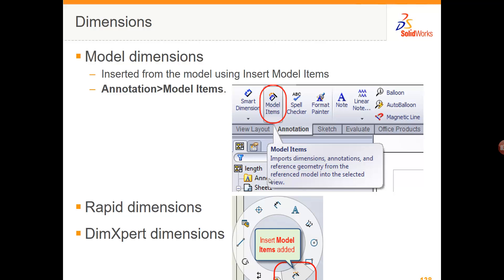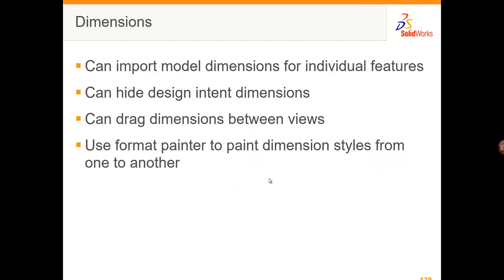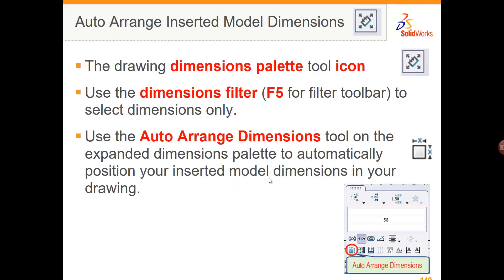Model Items, found on the Annotation tab, can be used to bring in your dimensions from your model. When you need to select dimensions in a drawing, you can use the dimensions filter — press F5 to turn on the filter toolbar — which allows you to filter for dimensions only. Then using the Dimensions Palette icon, when it expands you can use it to auto-arrange dimensions and add tolerances to your dimensions.